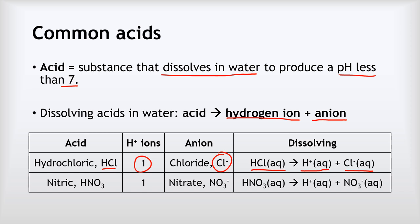The next acid is nitric acid, HNO₃ — that is hydrogen, nitrogen, and three oxygens. This also releases one hydrogen ion when it dissolves, and this time a nitrate ion, NO₃⁻. Notice that both hydrochloric and nitric acid release one hydrogen ion and produce anions with a single negative charge. The equation is: HNO₃(aq) → H⁺ + NO₃⁻.